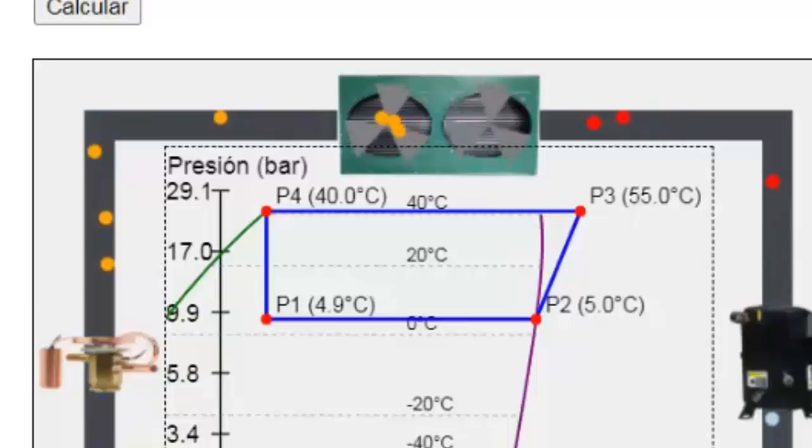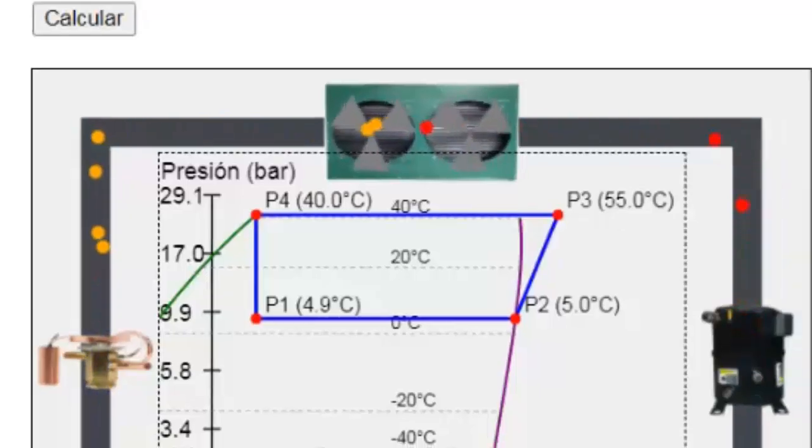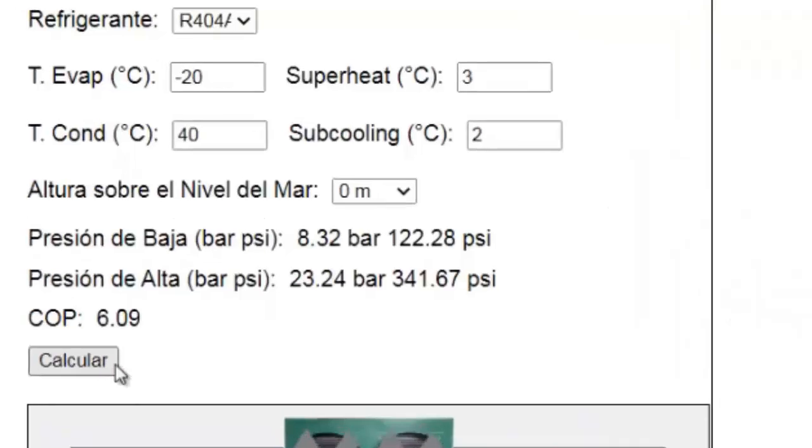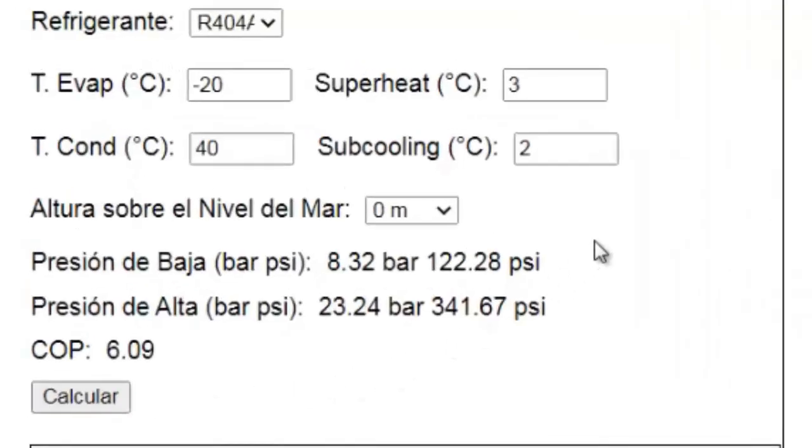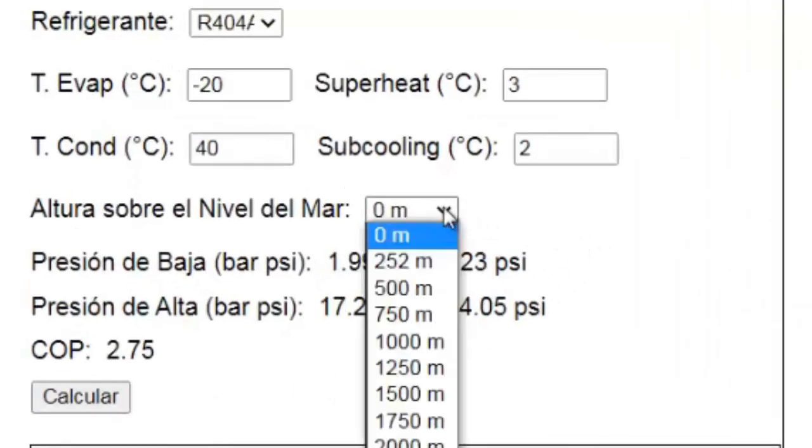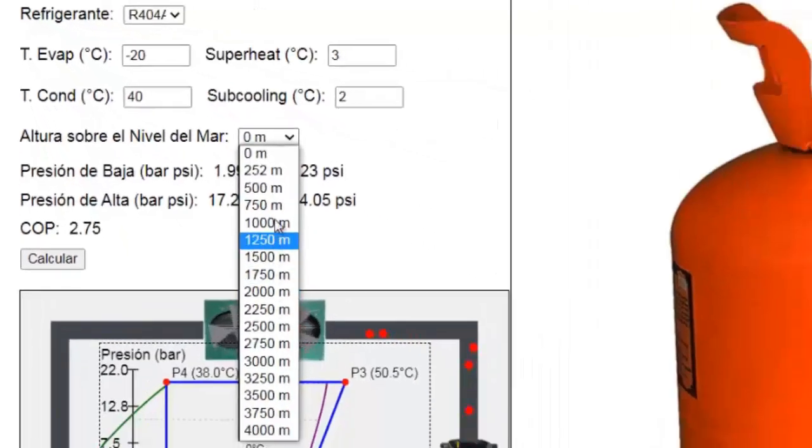The pressure indicated by the system's pressure gauge depends on the altitude above sea level. In this section of the simulator, we can select the altitude at which the equipment is located. This allows for a more accurate pressure gauge reading, which is crucial for high-precision refrigeration systems.